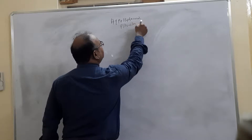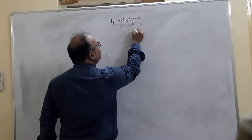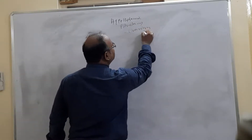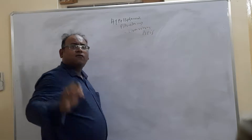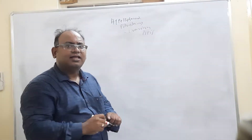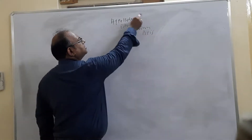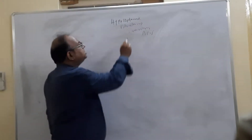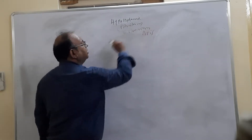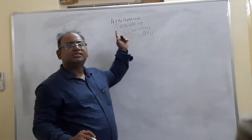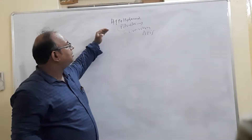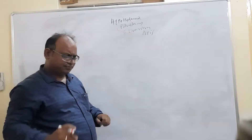First we have to understand what is hypothalamic-pituitary-ovarian axis. From the name itself, it is very clear that there is hypothalamus, there is pituitary, and there is ovarian. There is a link between these three parts.